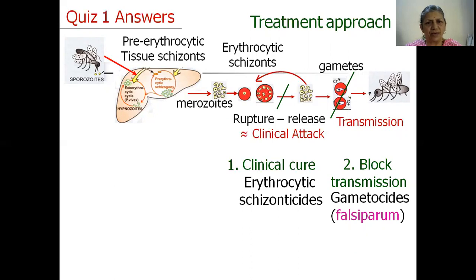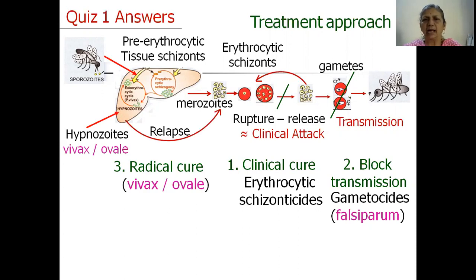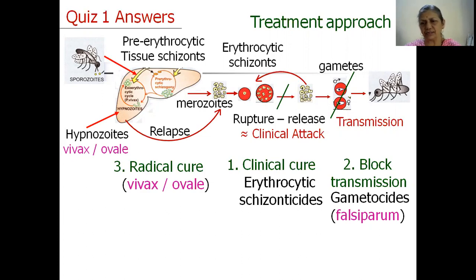For vivax and ovale, hypnozoites which stay back in the liver can decide to enter the bloodstream at a later stage and give rise to relapse. Therefore, to completely eradicate the malarial parasite vivax or ovale from the body, we need a tissue schizonticide to kill these hypnozoites.